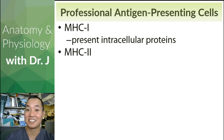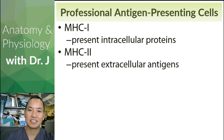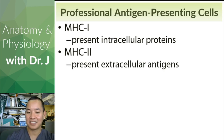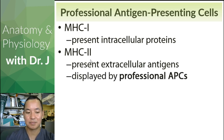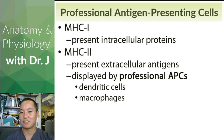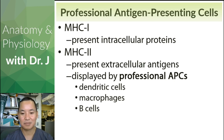MHC class 1 receptors present intracellular proteins — all nucleated cells do this as part of their standard routine. MHC class 2 receptors present extracellular antigens — things that professional APCs take from their surroundings and show to the immune system. Professional APCs make exclusive use of MHC class 2, including dendritic cells. Macrophages are also professional antigen presenting cells — not only do they eat pathogens and foreign things, but they also display antigens. B cells, which we haven't covered yet, are professional APCs as well.